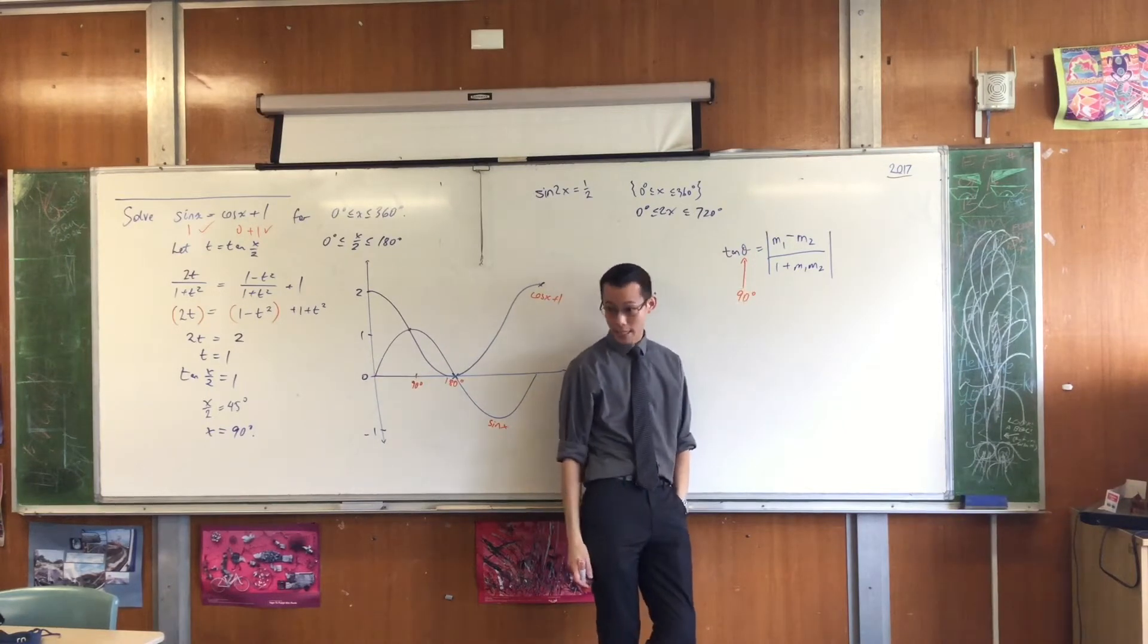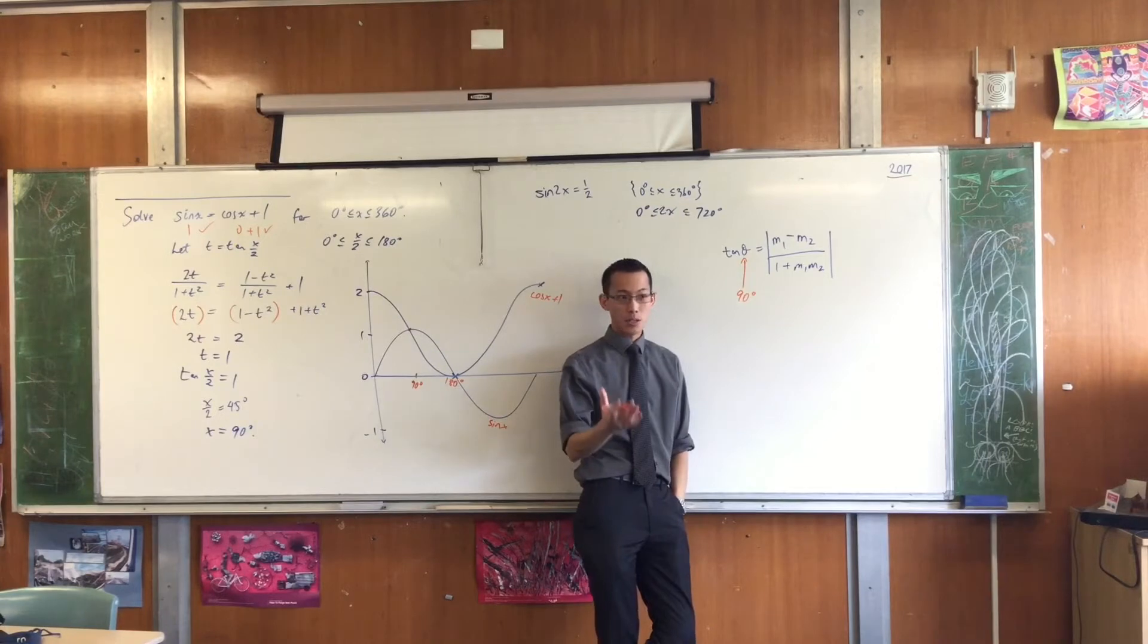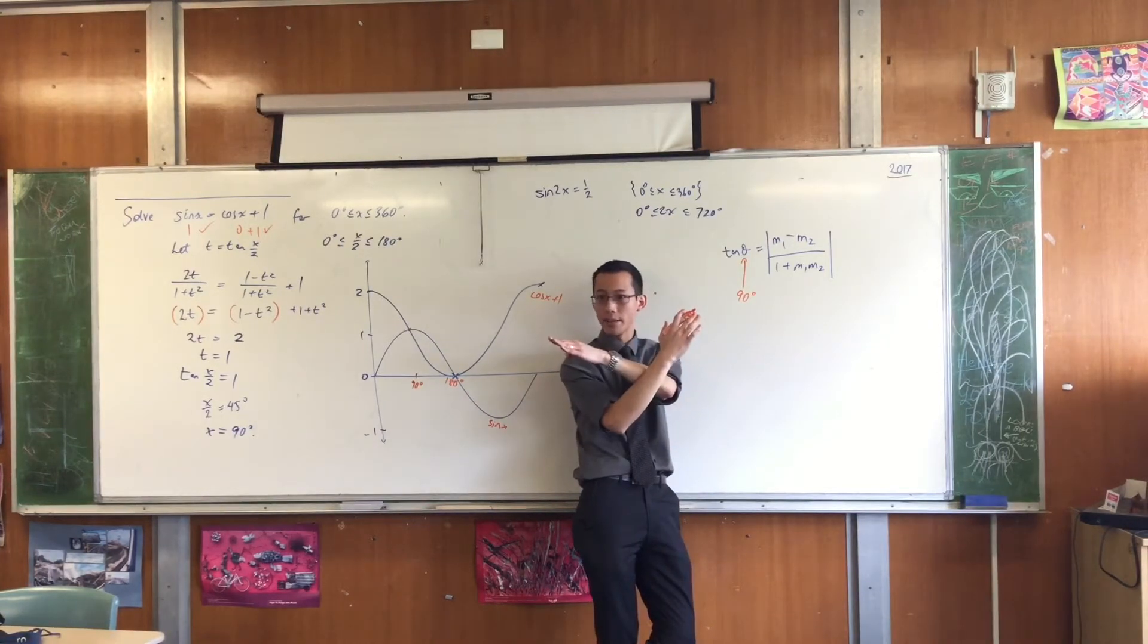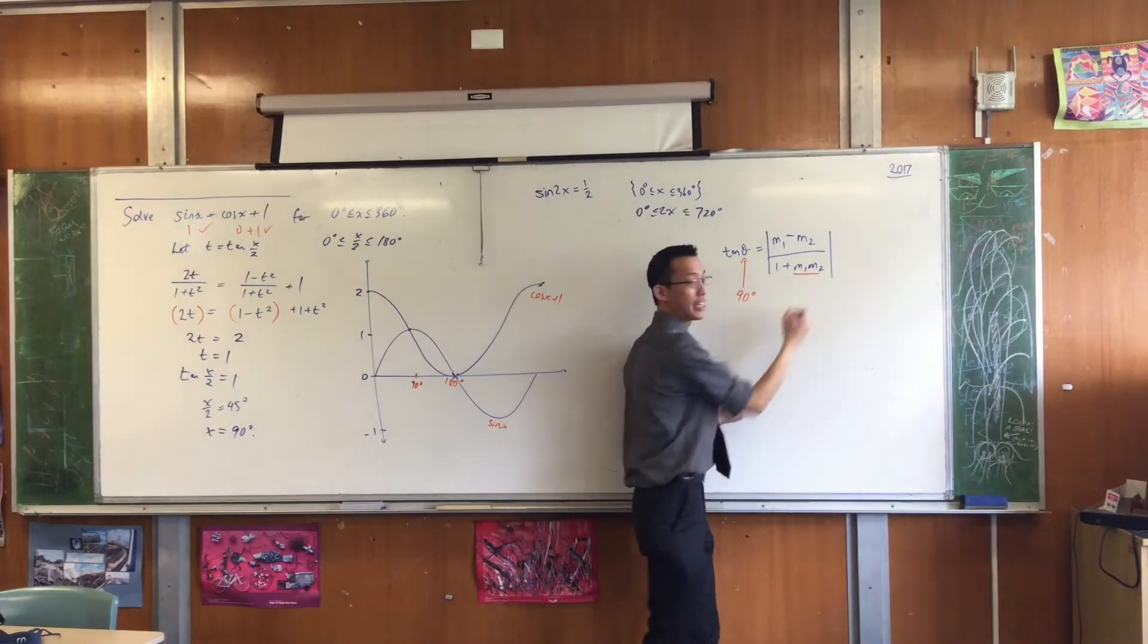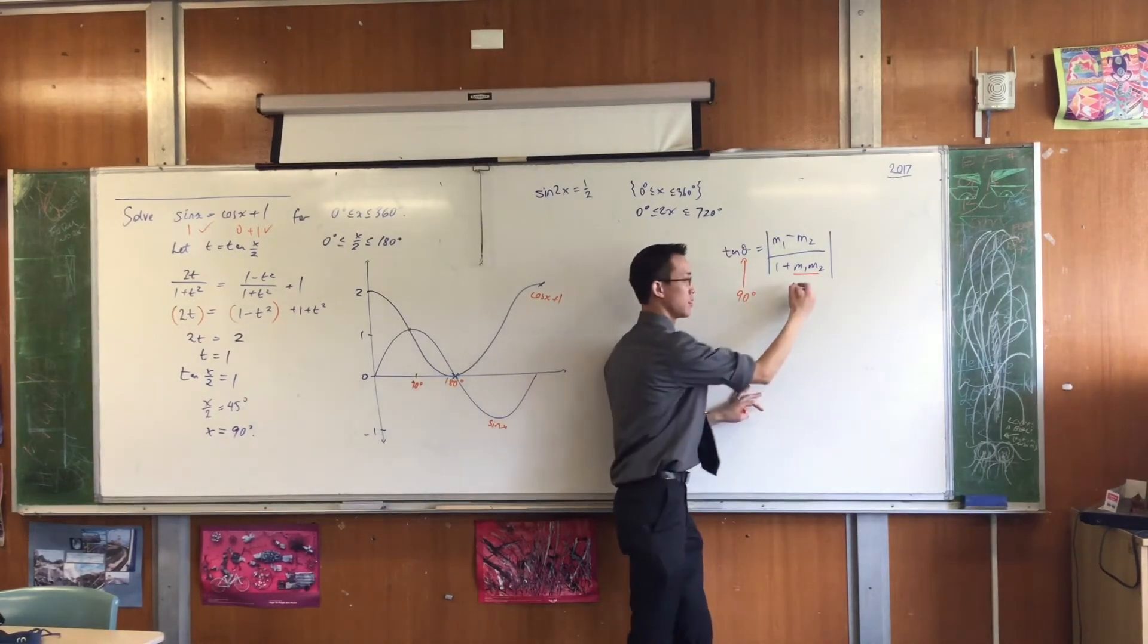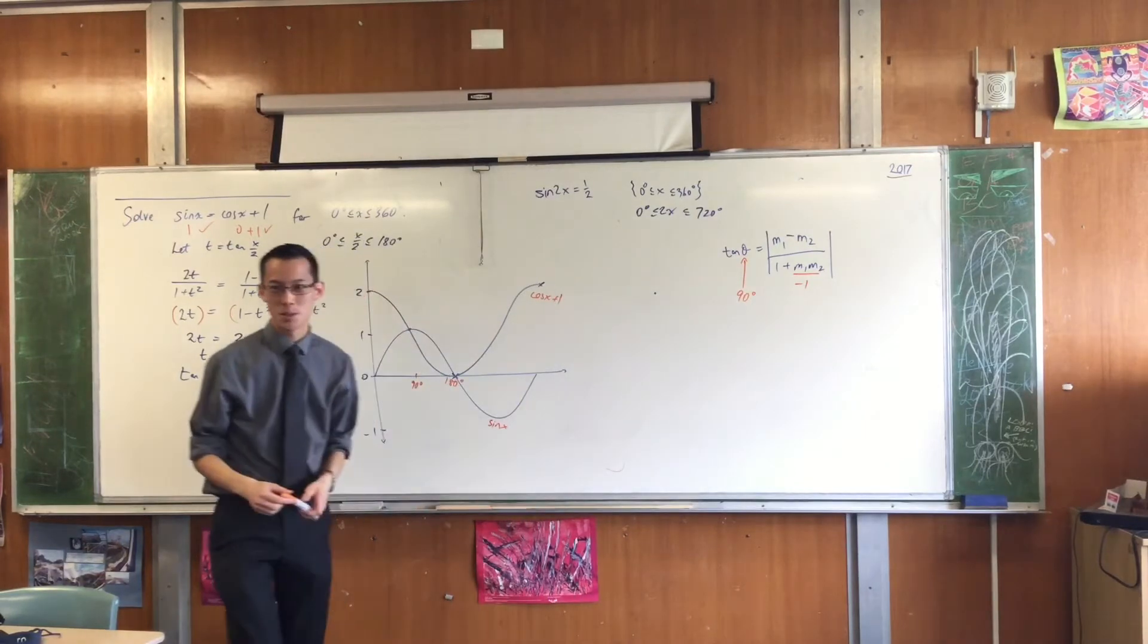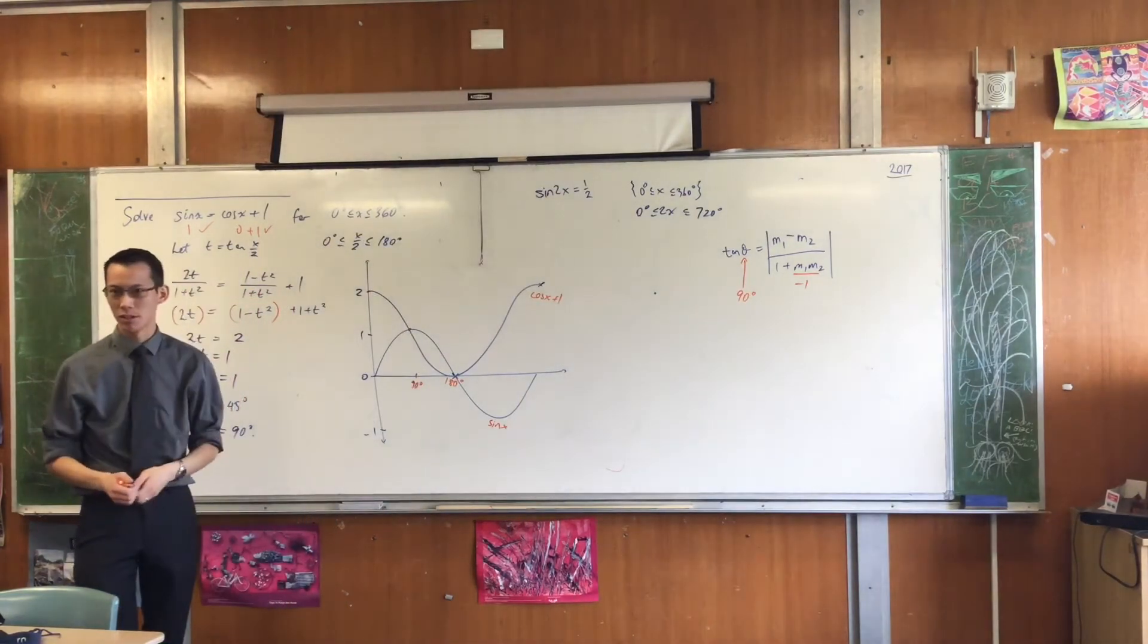If that angle is 90, that means that the angle between the two lines is, well it's a perpendicular pair of lines, right? Which means that this guy here is? And you're kind of stuffed because your denominator becomes zero and that's a bit of a problem.